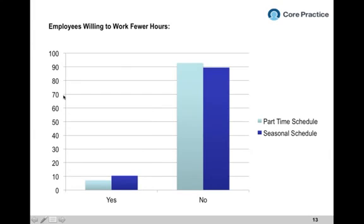Could we convince some employees to work a part-time or seasonal schedule under 30 hours, so we don't have to pay their benefits? We've asked employees this question, and the answers aren't great for management. About 10% would work a seasonal schedule, and less than 10% would work less than 30 hours regularly. Very few say they'd work 20 hours with no benefits — that's typically only around retirement age.